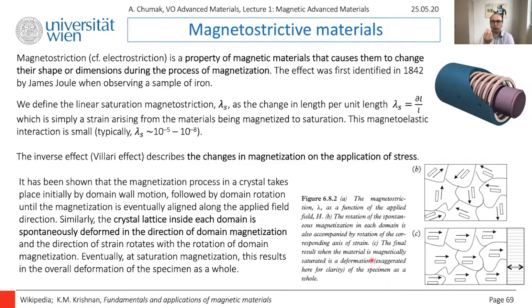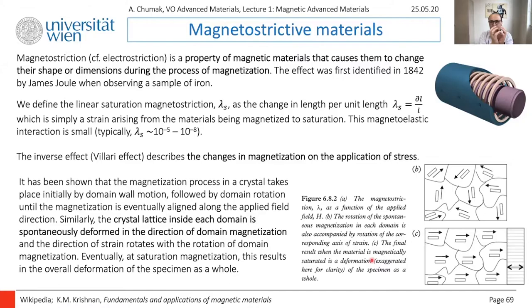Besides crystallographic anisotropy, which comes from the crystal structure, there is also shape anisotropy. For example, in a thin film, magnetization in most materials prefers to stay along the plane of the film to minimize the influence of the demagnetizing field. This is usually a hard axis out of plane. If you take a sphere, however, shape anisotropy is always the same in all directions.